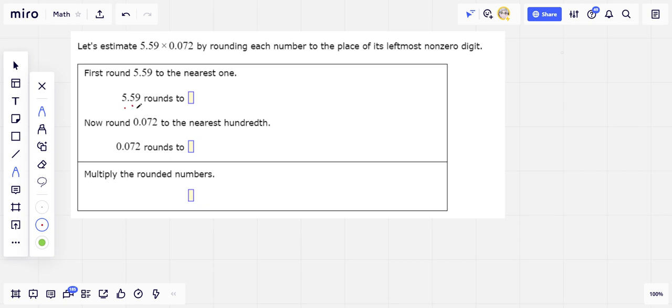We look at the place value to the right, and if it's 5 or above, we round up. So we're going to round this 5, 5.59, up to a 6.